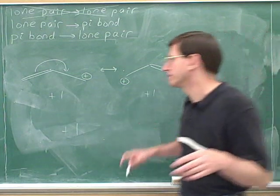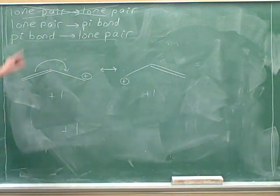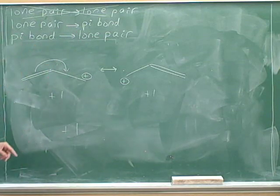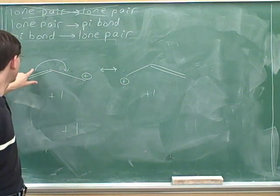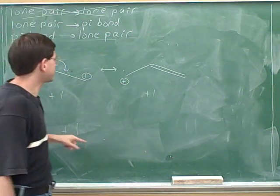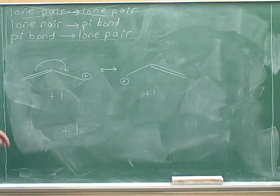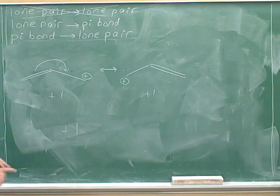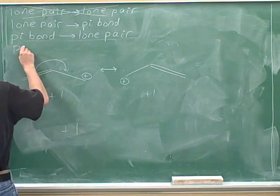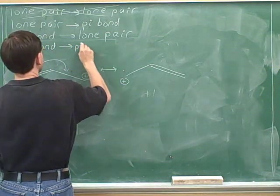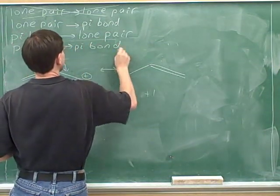Now this is a new pattern that we haven't seen before. We've talked about going from a lone pair to a pi bond, and from a pi bond to a lone pair, but here we have a new pattern: we're going from a pi bond to another pi bond. The electrons were taken from a pi bond in one place and went to a pi bond someplace else. So let's write down that new pattern — pi bond to pi bond.